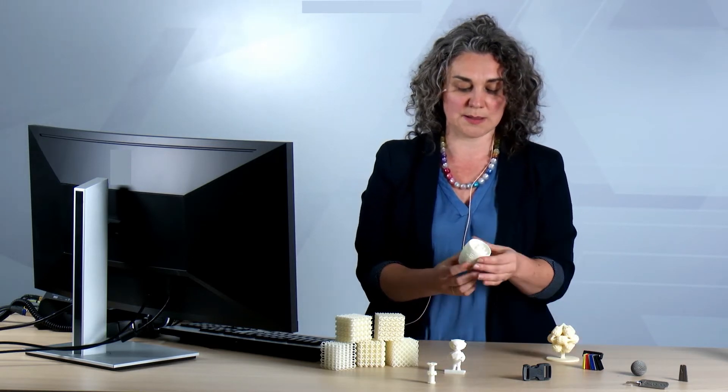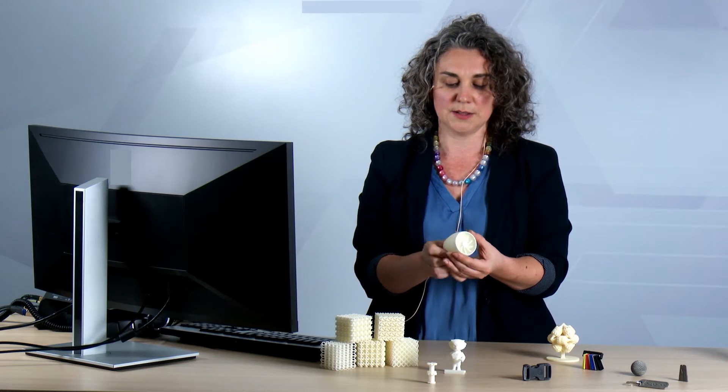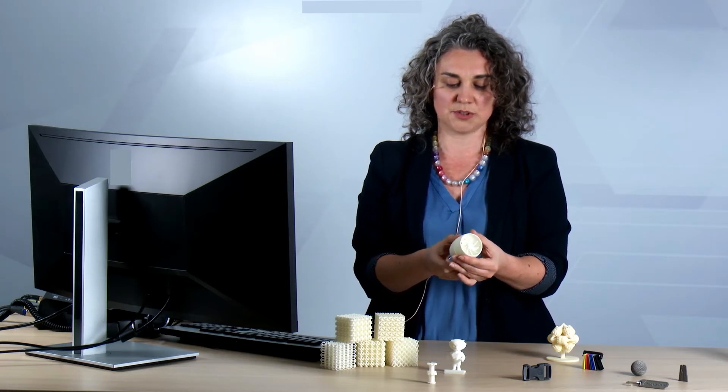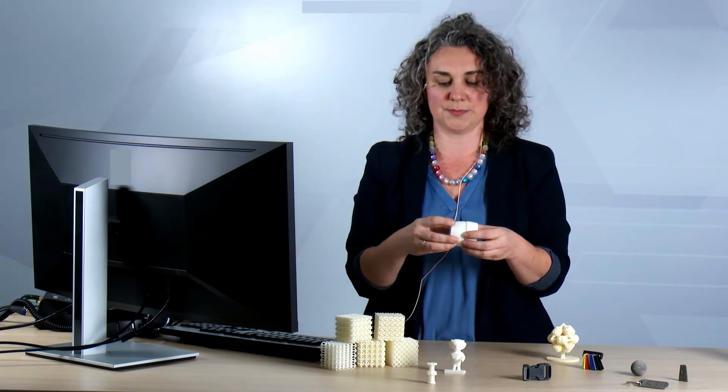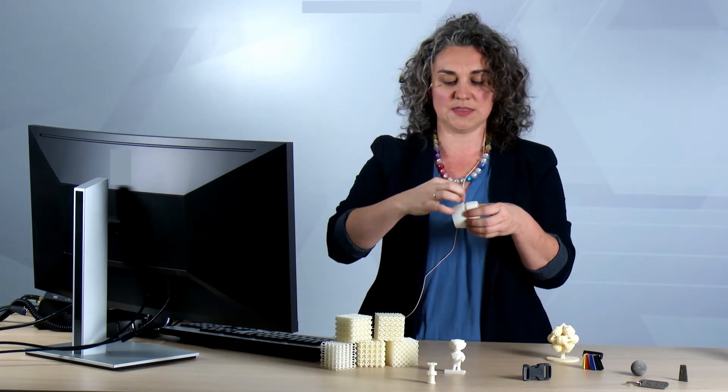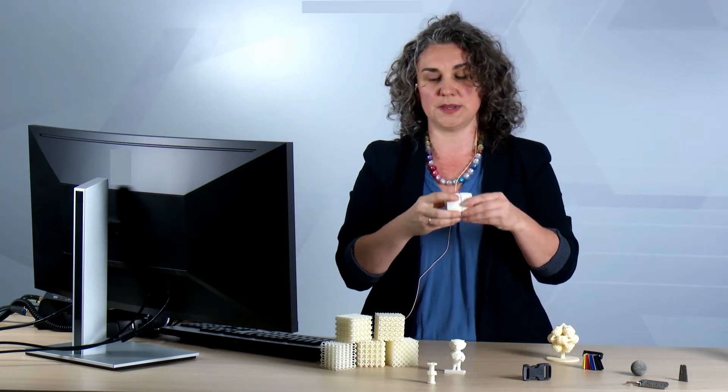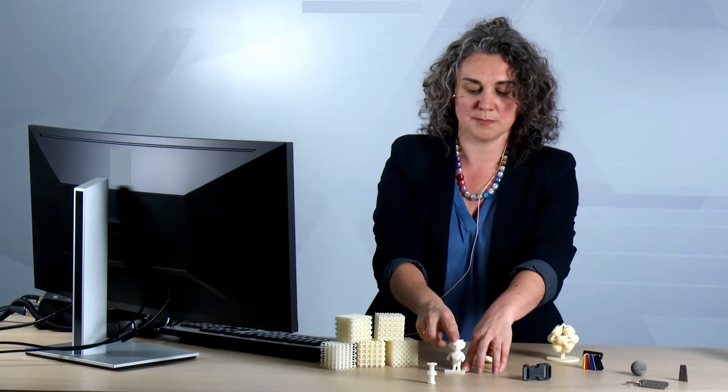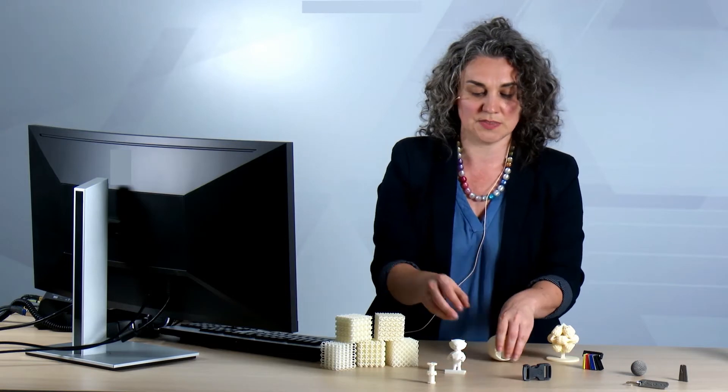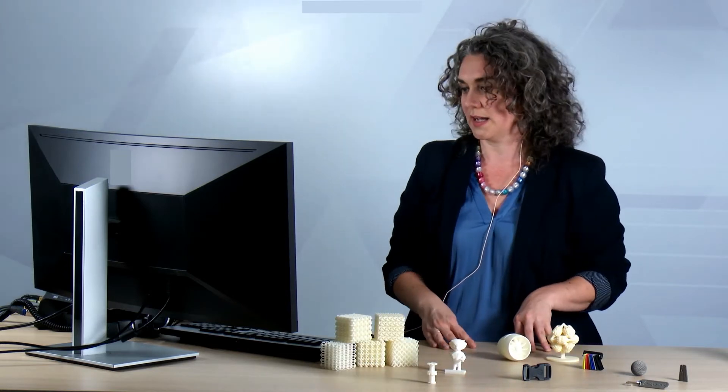Another example that I haven't shown before is this turbine. It's a little demonstrator from EOS, comes out of the printer like that. Only the particles are dusted off in between and then it's able to rotate, and the little bucky bobblehead. This is actually out of a nylon 12.